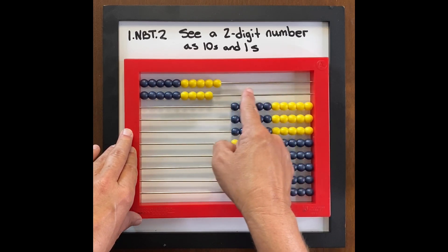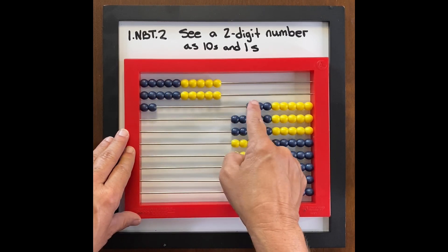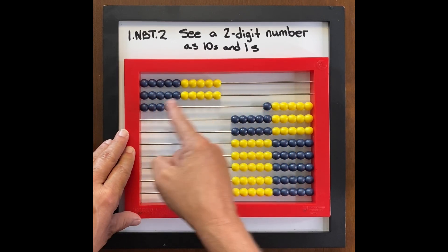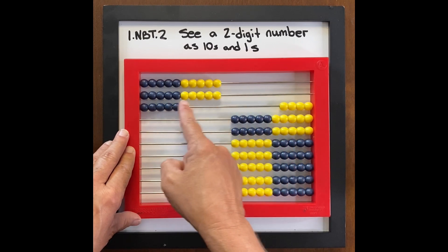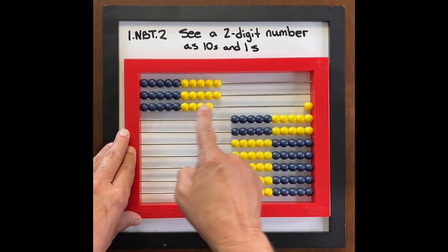And students know to say two tens. Two tens one, two tens two, two tens three, two tens four, two tens five, two tens six. So I'm constantly counting in tens and ones, constantly. Two tens nine.